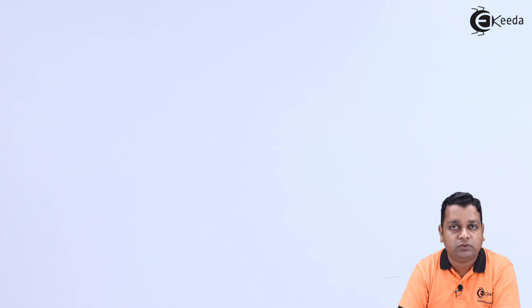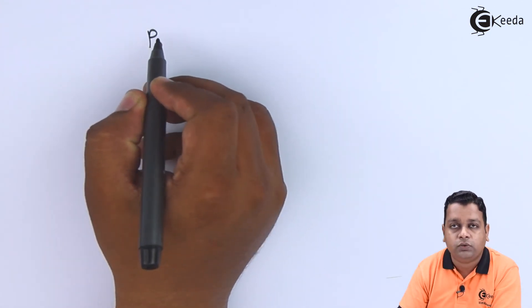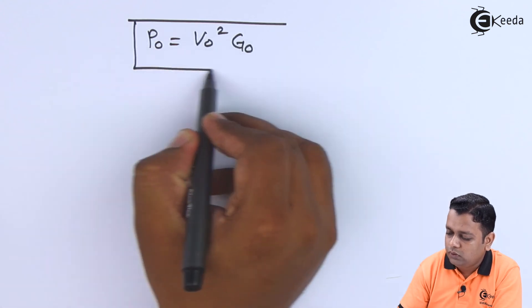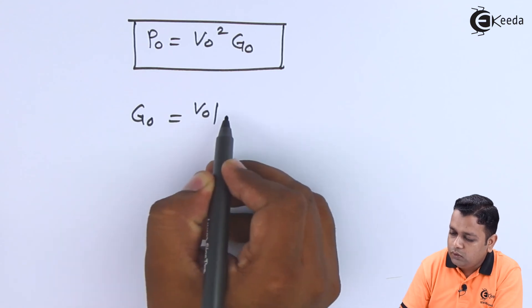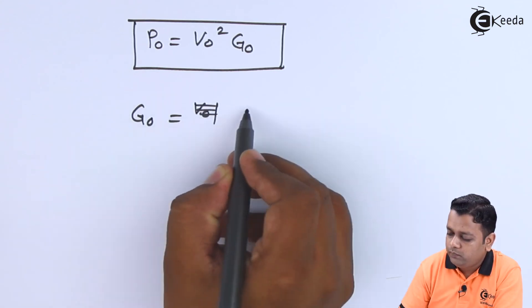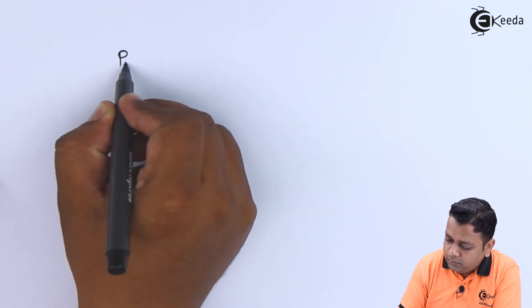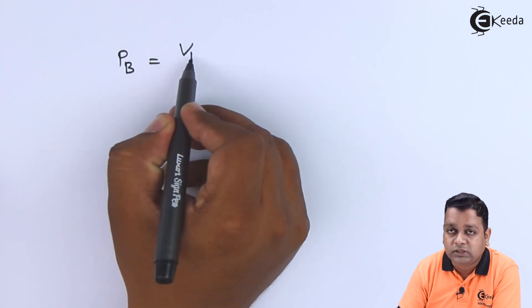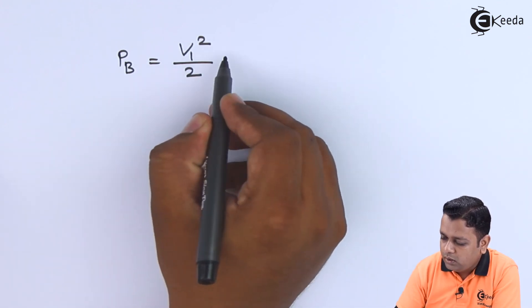For the 2-cavity klystron, input parameters are the beam current I0 and the potential applied to the electrodes V0. If power is represented in terms of conductance, the formula is P0 = V0^2 * G0, where G0 = I0 / V0. Finally, the power delivered by the buncher cavity for the bunching purpose is given by: P_B = V1^2 / 2 * G_B, where V1 is the maximum RF voltage and G_B is the conductance related to bunching.